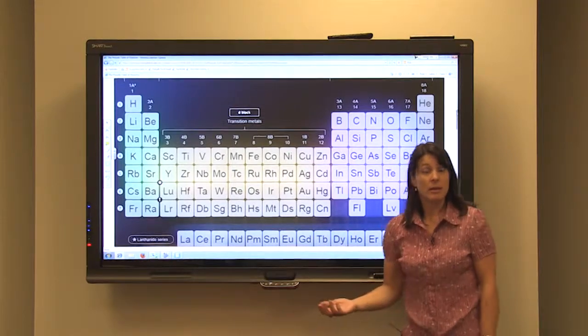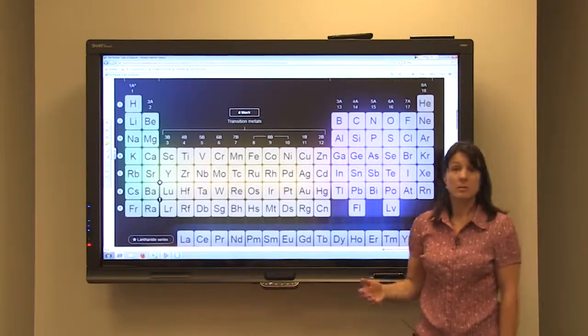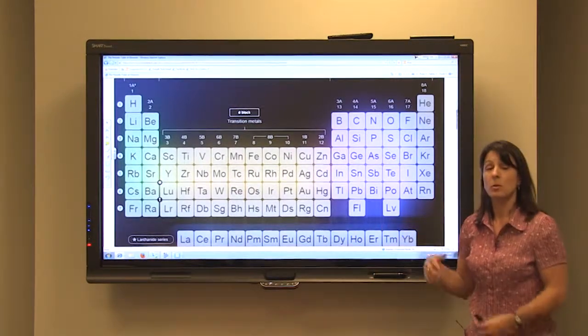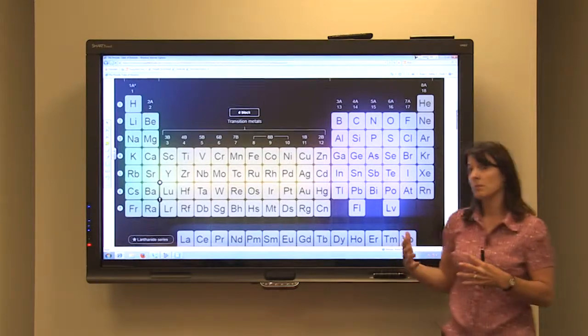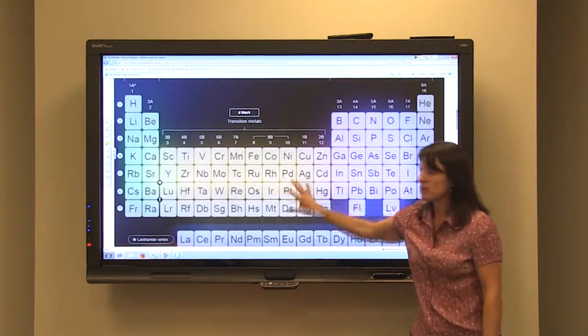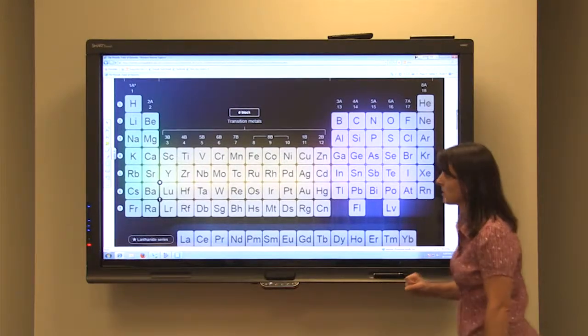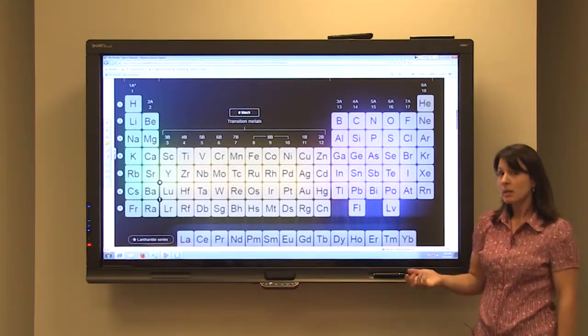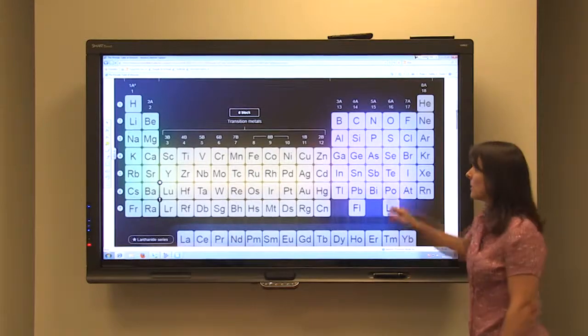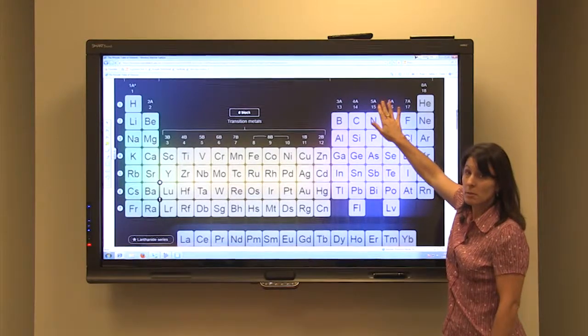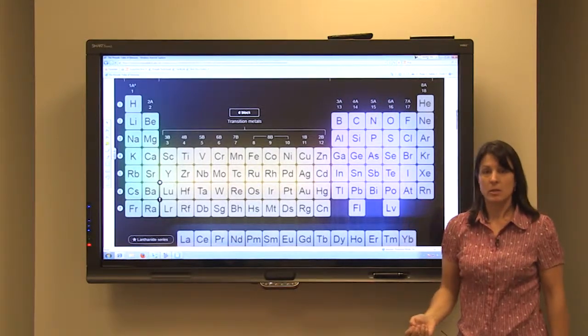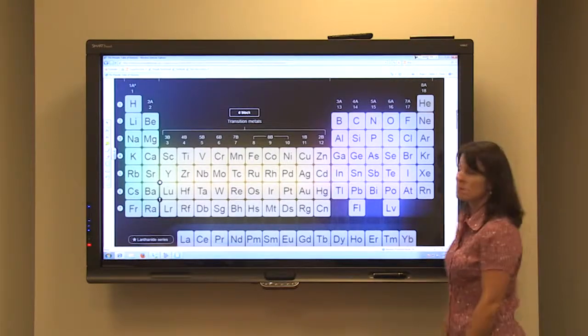I tend to use the AB lettering system because it differentiates between the representative elements that tend to follow the rules and the transition metals are elements that tend not to follow the rules. So for our representative elements, the A groups, whatever the group number is, that's how many valence electrons are in that specific atom.